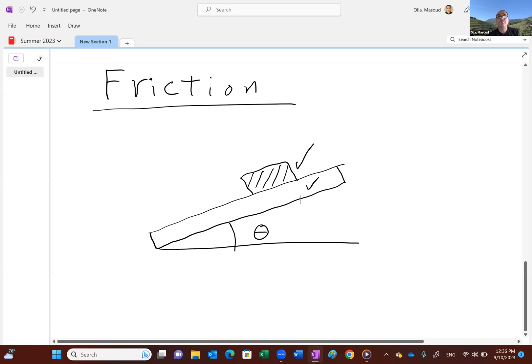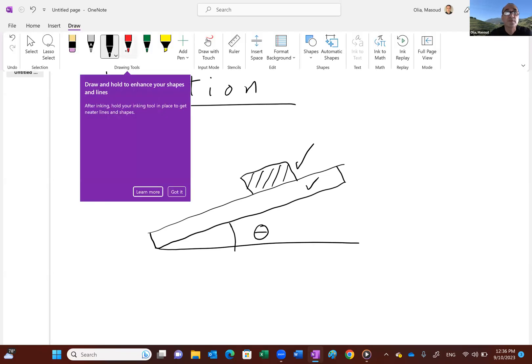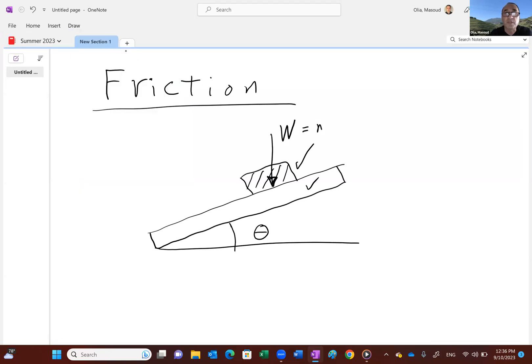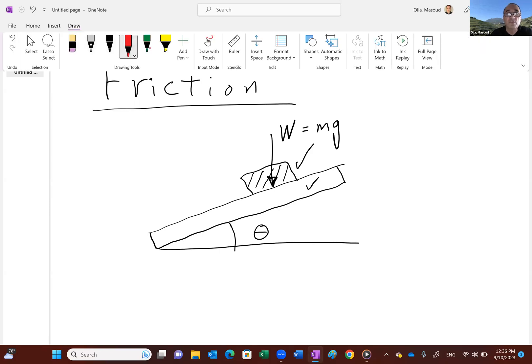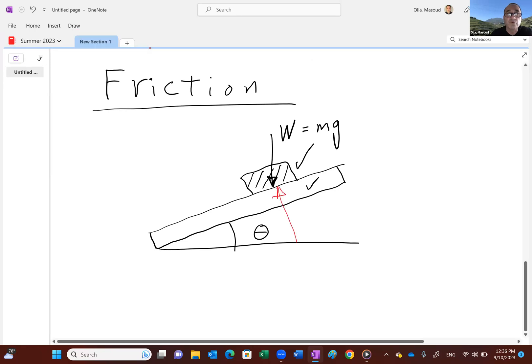So look, guys, if I draw a free body diagram of this, let me actually start with the weight of this object. Weight is Mg. Then the forces that you guys know from physics are the normal force, which is 90 degrees to the surface, and then the friction force. So the impending motion is about to be down, down the ramp, and so the friction is opposing that motion.